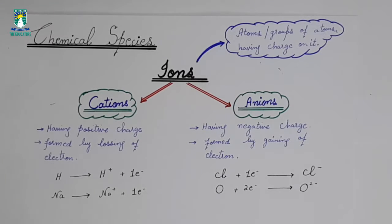The first chemical species is ion. An ion is an atom or a group of atoms having charge. When an atom acquires a charge, whether positive or negative, it is called an ion.